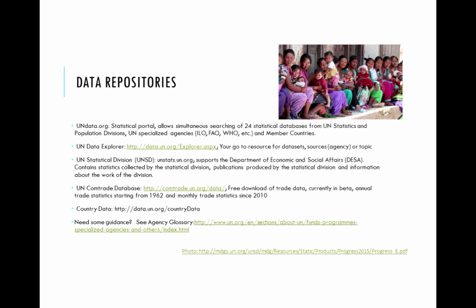What is great about UN Data Explorer — and this is definitely one site you want to mark down — is that it includes complete data sets, sources indicating what agency or program of the United Nations provides the information, and the information is listed by topic. This is a great resource because students may come to you with a topic in peace and security, but they may not know what indicator they're looking for or the particular name of a data set. The UN Statistical Division has a website called unstats.org that supports the Department of Economic and Social Affairs, and you can get all the division information on this website.